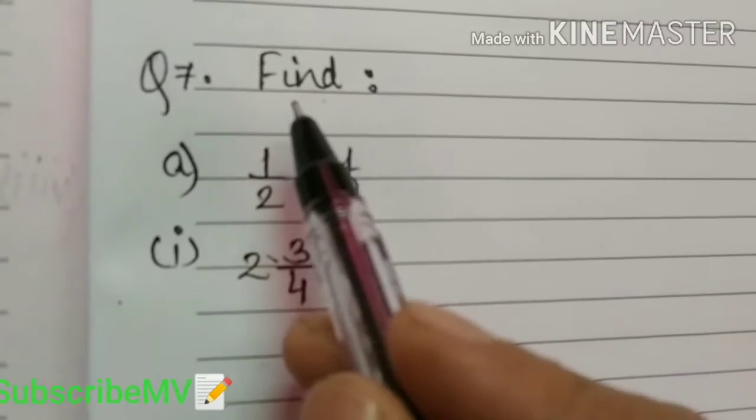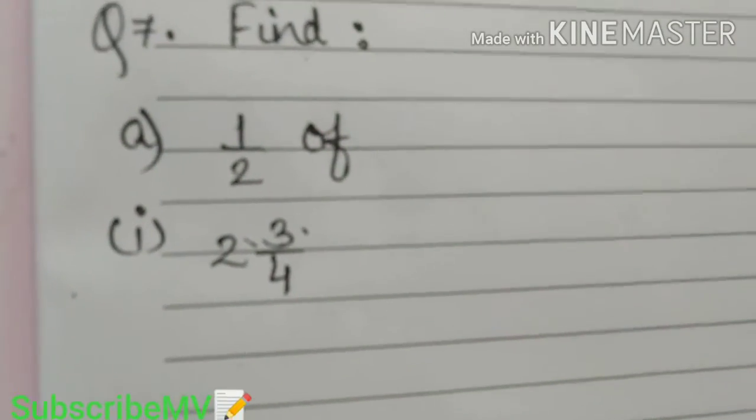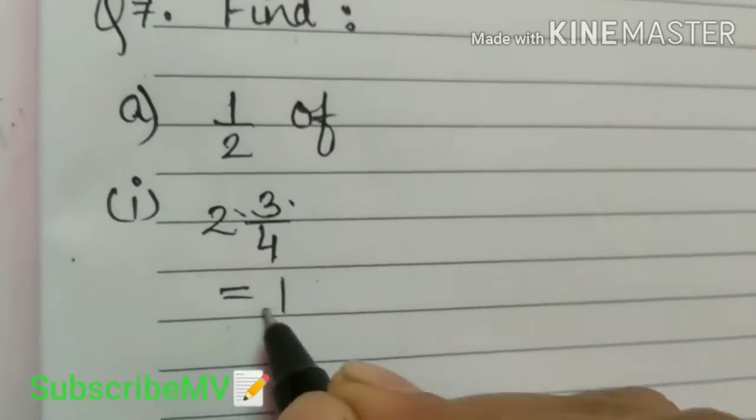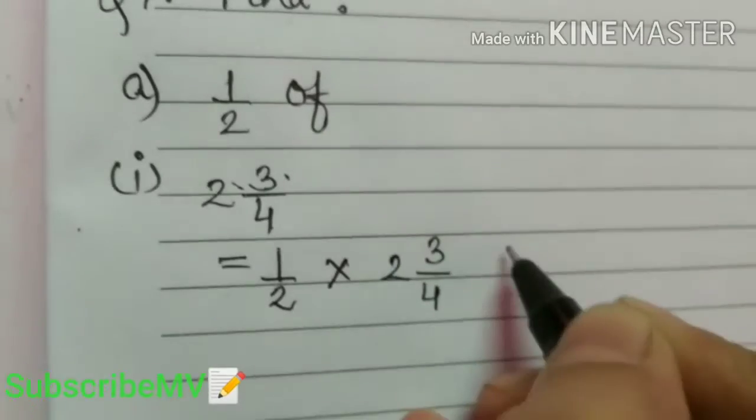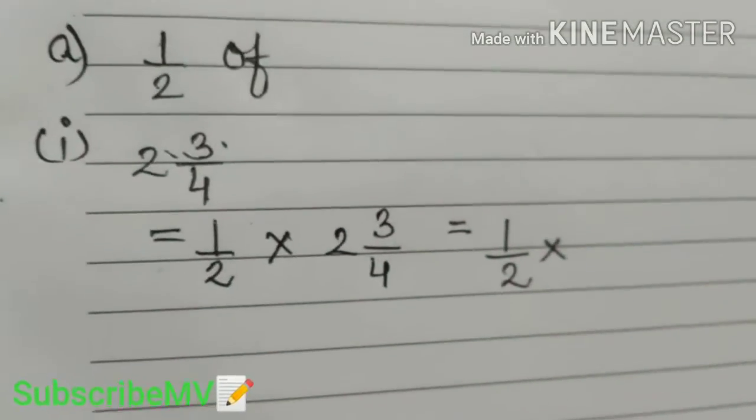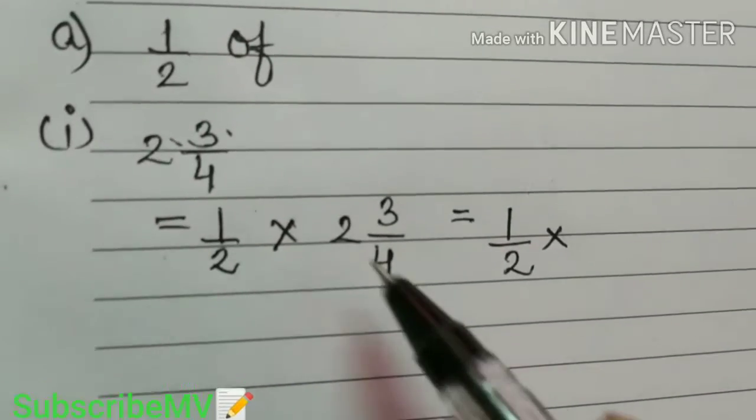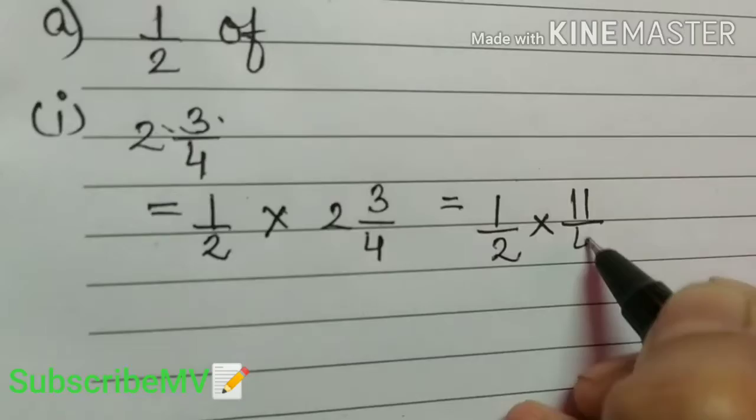So here I have written the question. We have to find half of 2 3/4, that is half multiplied by 2 3/4. That is equal to half into 2 times 4 plus 3, that is 11/4.